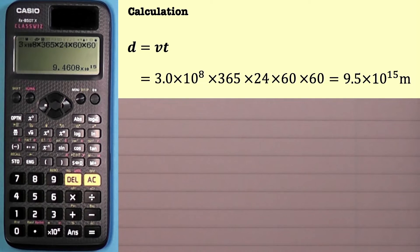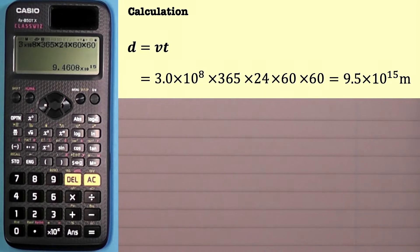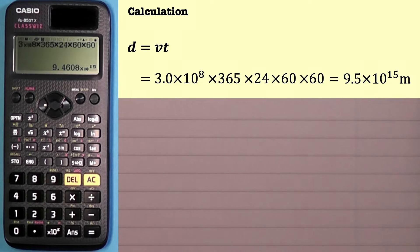We'll get onto two examples shortly, but the important thing to remember with light years is that you really need to remember this method. We start with the equation: distance is speed times time, where the speed is the speed of light and the time is the number of seconds in one year. The reason is that many questions on light years are 'show' questions — you won't get full marks unless you write the equation and show all steps in your substitution before arriving at a final answer.